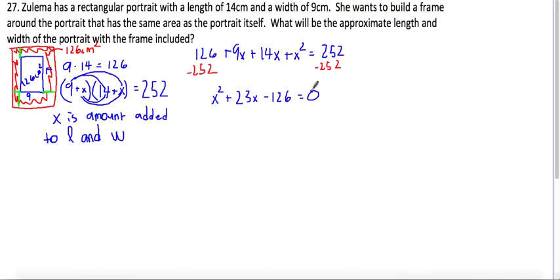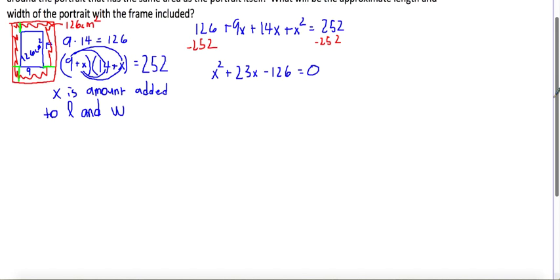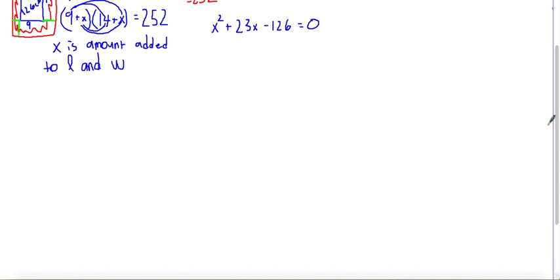So we could try to solve this by factoring. 126 has a lot of factors and I don't want to list all of them out. So this is an example of a time where it's probably easier to just use the quadratic formula. So we're going to have x equals negative 23 plus or minus the square root of 23 squared minus 4 times 1 times negative 126.